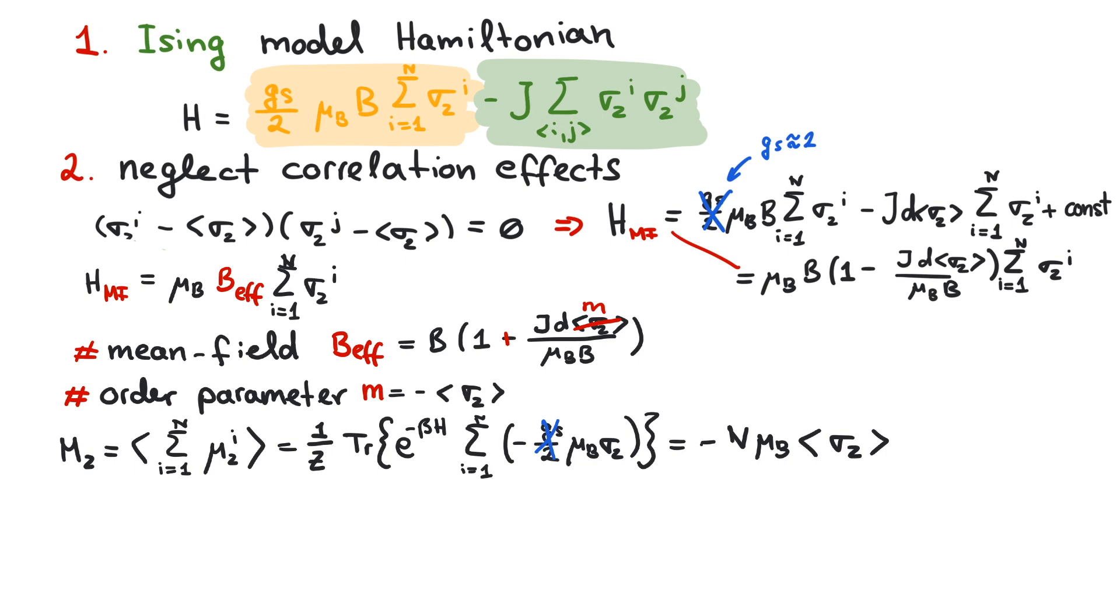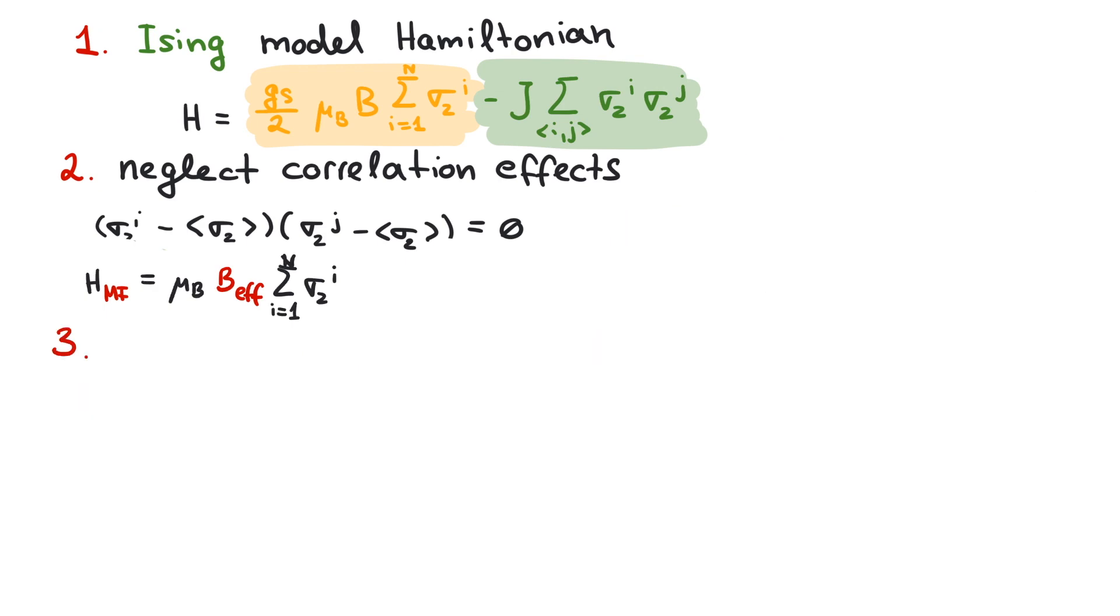The third step is to solve the mean field Hamiltonian. In order to find the self-consistency equation, we need to solve for the observable corresponding to the order parameter. That is, we need to compute the magnetization for the effectively non-interacting system. Here's the solution at a glance. If you don't know how to get there, check out our video about magnetization of non-interacting spins, which is linked in the description.